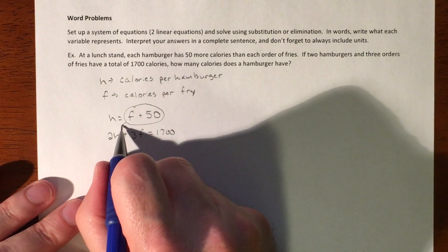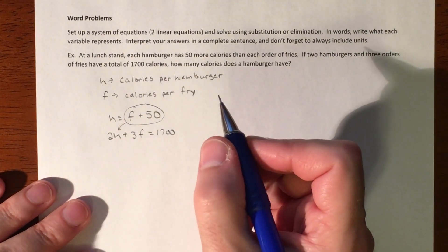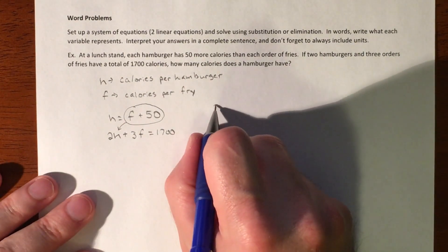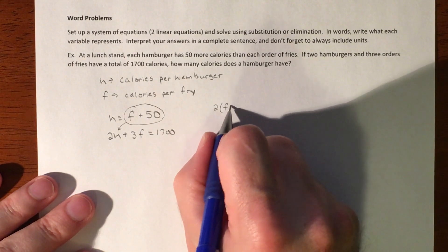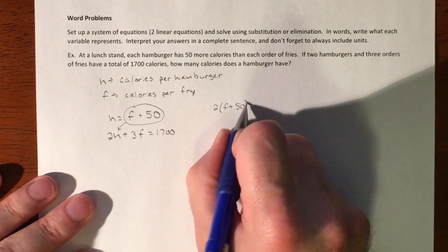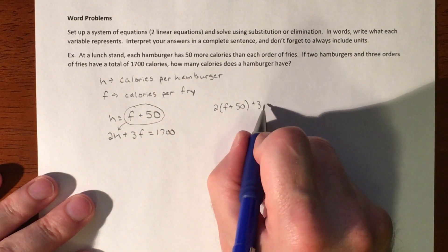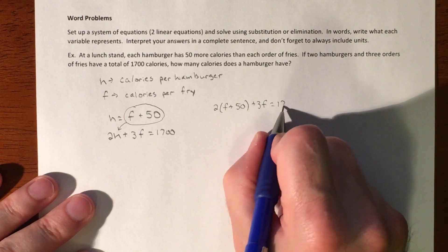So I could be substituting that into H, and so that's what I'm going to do. So we have two times F plus 50 plus 3F equals 1,700.